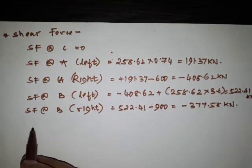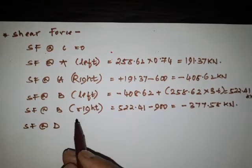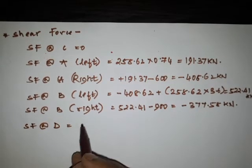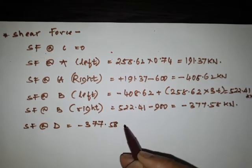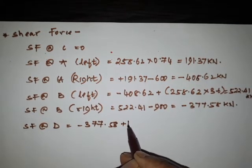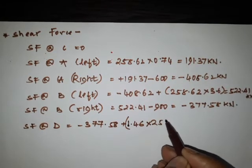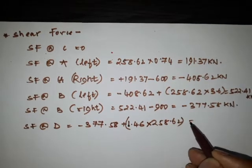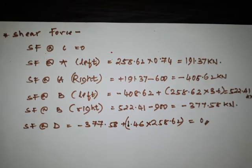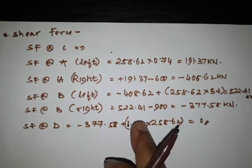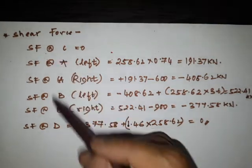To check, shear force at D: minus 377.58 plus 1.46 into 258.62, which gives 0. So we have verified shear force at all points A, B, C, and D.